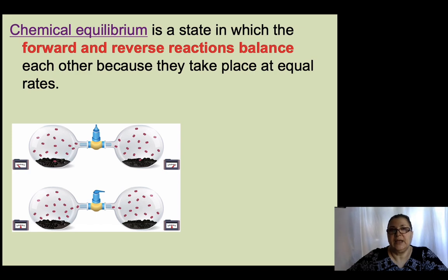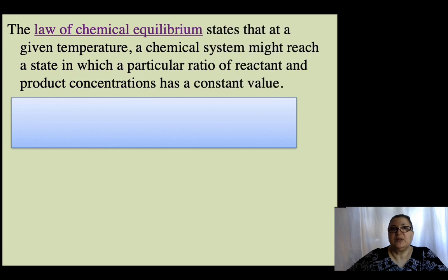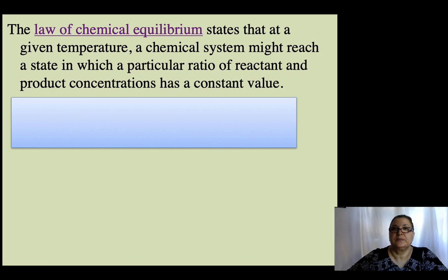We call the whole process chemical equilibrium. The law of chemical equilibrium states that at a given temperature, a chemical system may reach a state in which a particular ratio of reactant and product concentrations has a constant value.